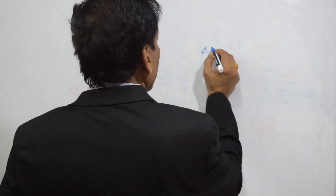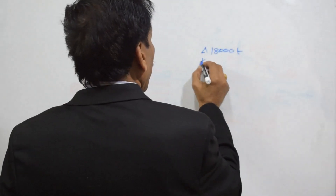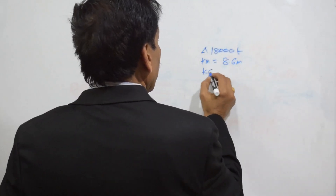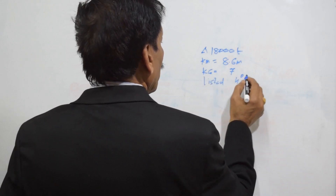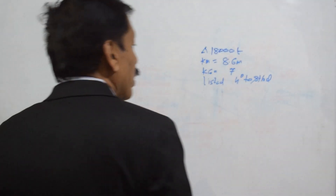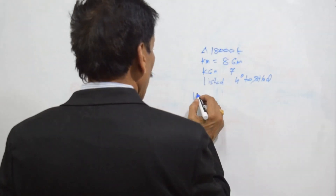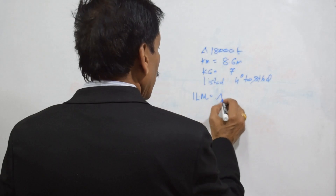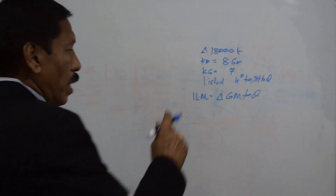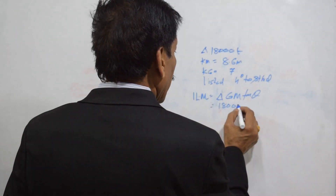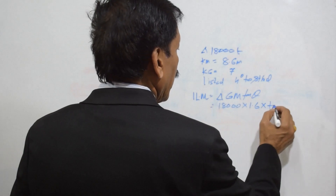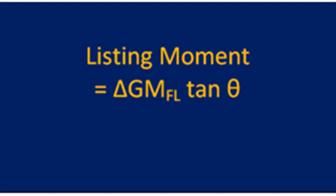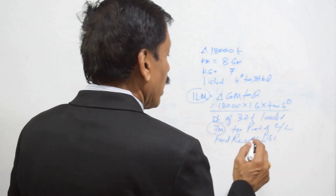Let us say a ship has a displacement of 18,000 tons, KM of 8.6 meters, and KG of 7 meters. The ship is listed 4 degrees to starboard. The initial listing moment equals delta into GM·tan theta. GM is 1.6 meters (8.6 minus 7), and tan theta is tan of 4 degrees. We are able to find out the initial listing moment. It is then loaded 7 meters to port of centerline at a KG of 4 meters.